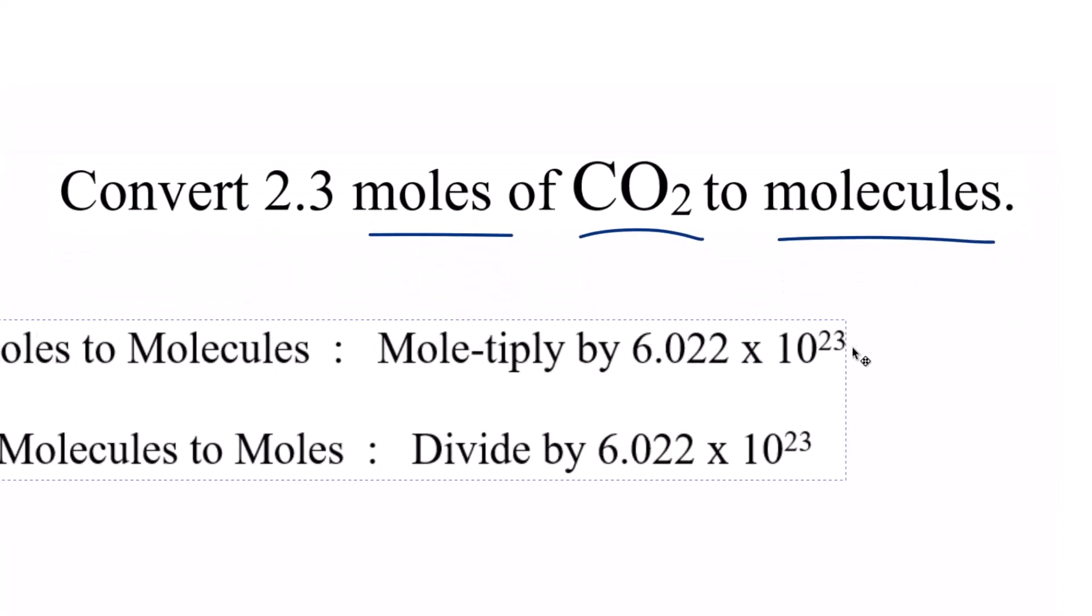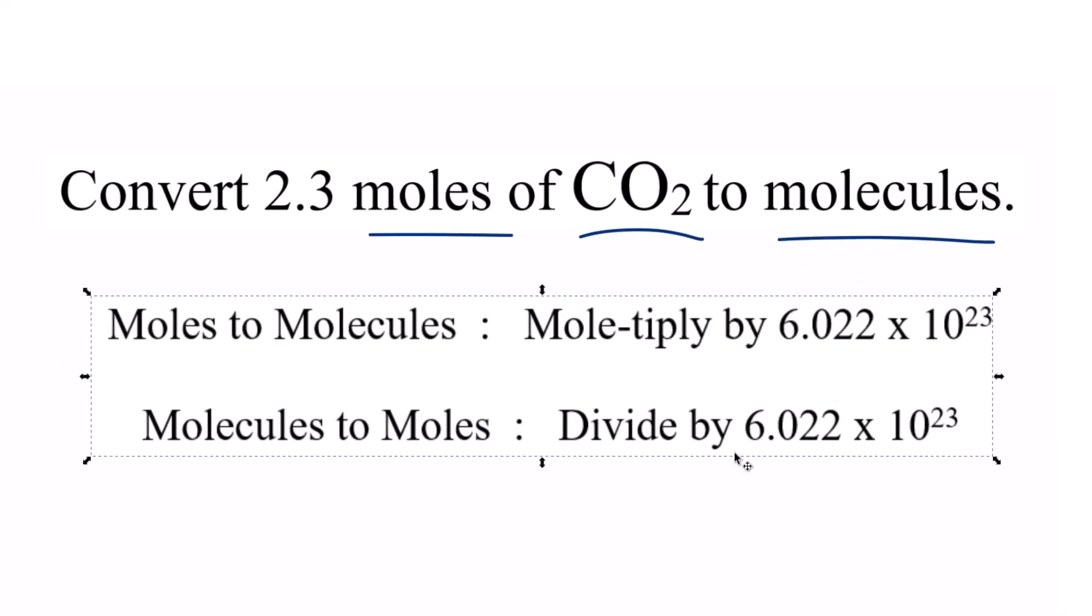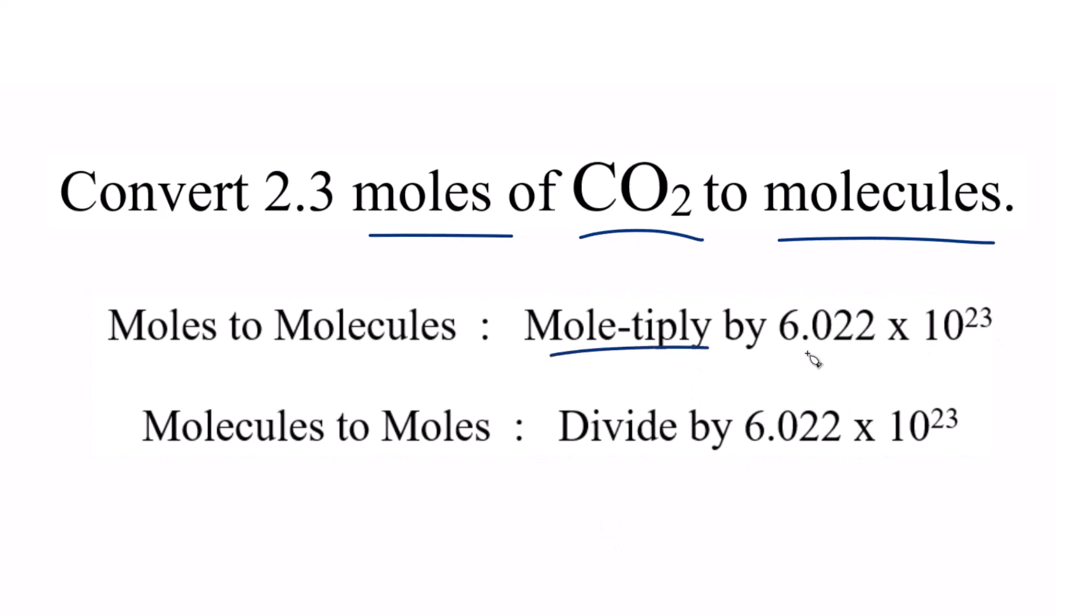When we're going from moles to molecules, we're going to multiply by 6.02 times 10 to the 23rd. So kind of a mnemonic to help you remember. If we go from moles to grams, we multiply. If we go from moles to liters, we multiply. So when you're going from moles to another unit, you're going to multiply, in this case, because it's molecules, 6.022 times 10 to the 23rd.